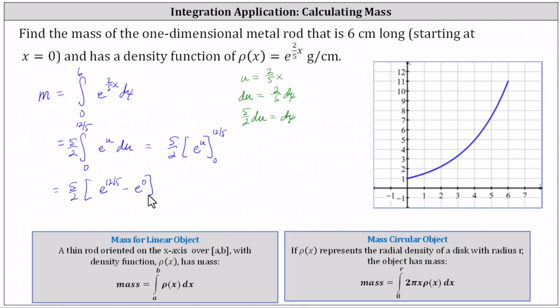Be careful, e to the zero is one, not zero. So the exact mass is five halves times the difference of e to the 12 fifths power and one.